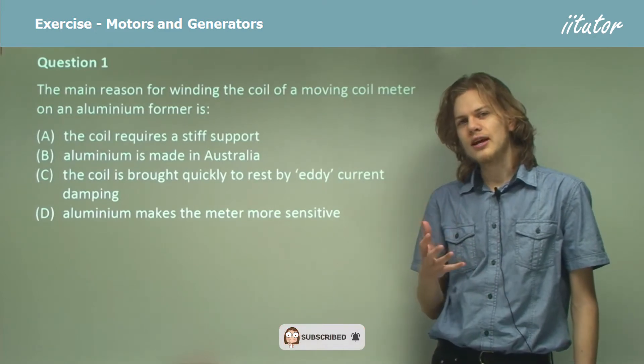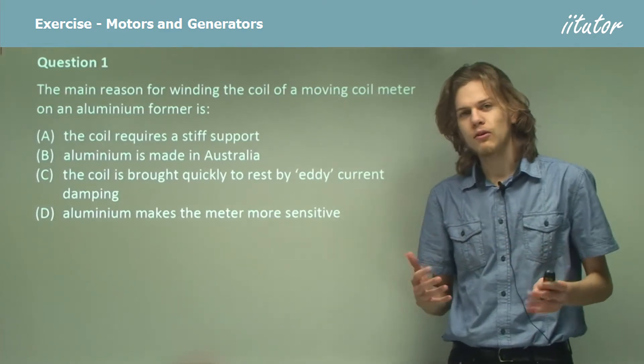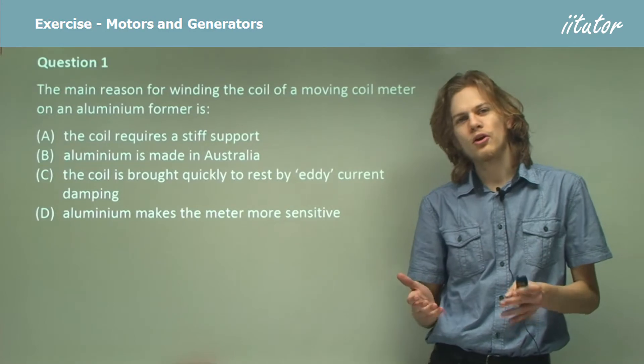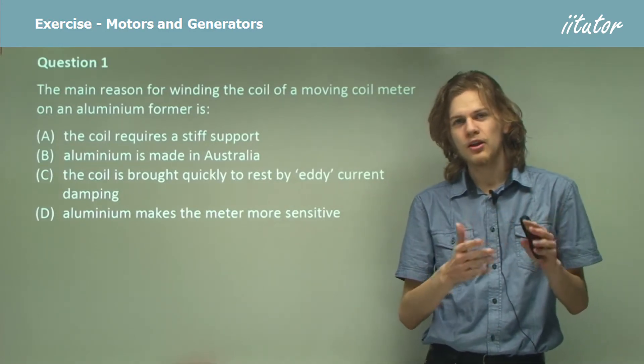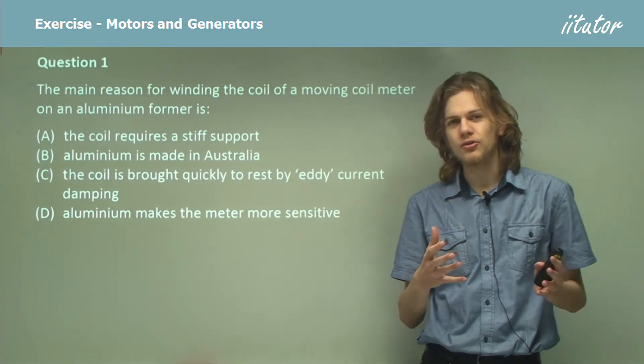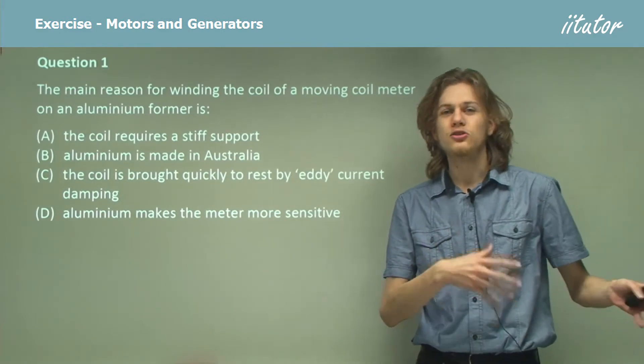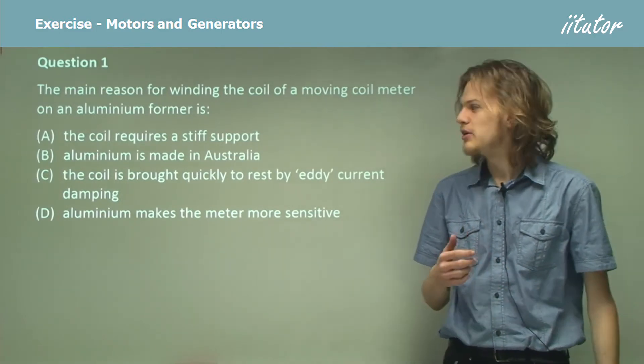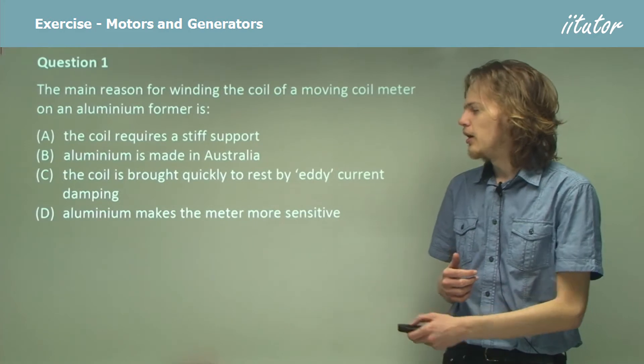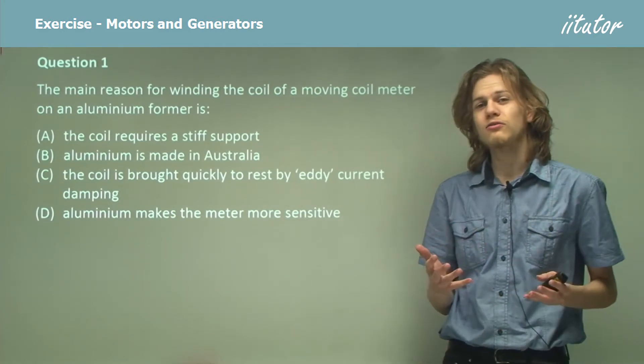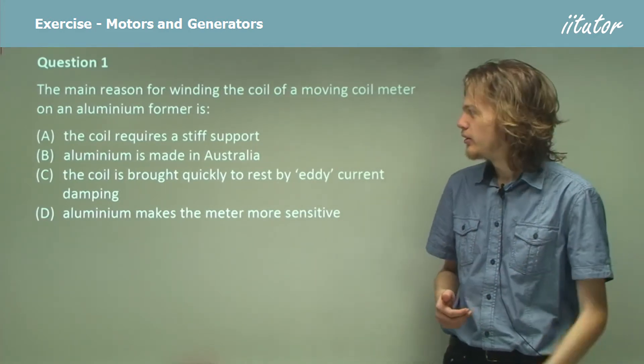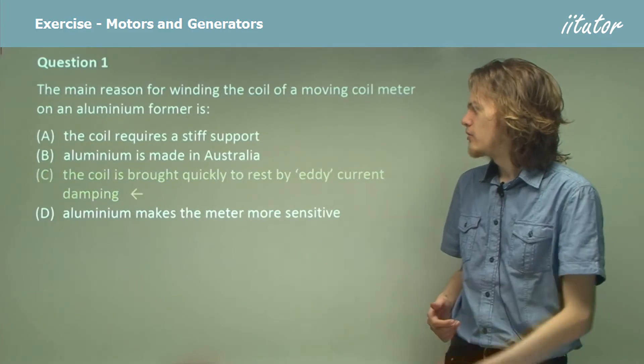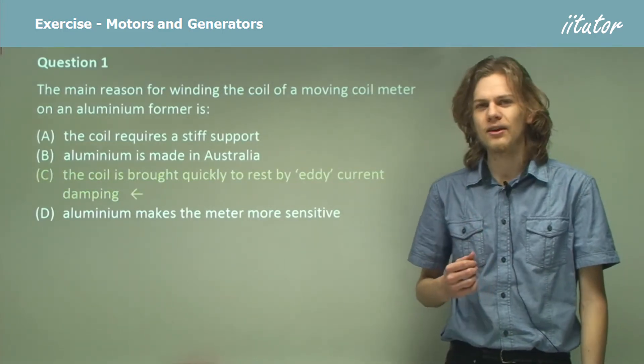Now remember in this case, if we're looking at a reading on a coil meter, we want the coil to come to rest quickly. The best way to do that is to produce eddy currents that will slow down and stop any movement of the meter. And the best way to do that is to have a conductive metal like aluminium. So if we use aluminium, then the coil is brought quickly to rest by eddy currents.